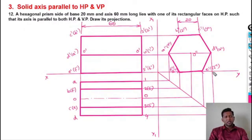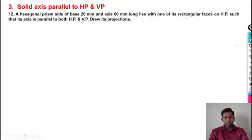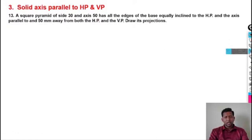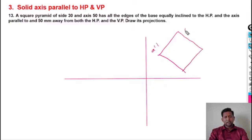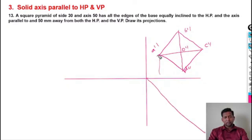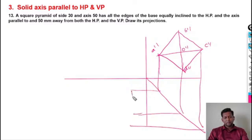The dimensions to show are 20mm for the side and 60mm for the axis. The prism is resting with one of its rectangular faces on the HP. This completes the solution for problem number 12. For problem 13, the solid axis is perpendicular with all edges equally inclined, and you draw the side view true shape first with the axis parallel to both HP and VP.